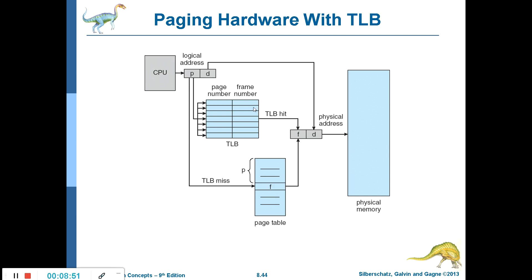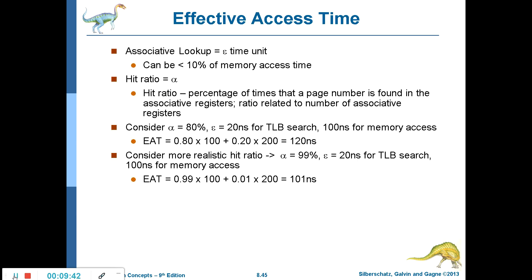If the page number is already available in the TLB, directly get the frame number — this is called a TLB hit. Then add the frame number with the offset and go to that physical address. If the page number is not available in the TLB, that is a TLB miss, and we have to go to the page table to find the corresponding frame number.